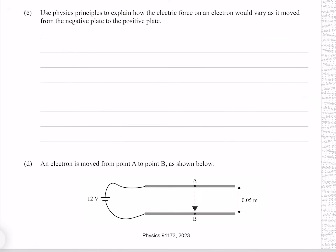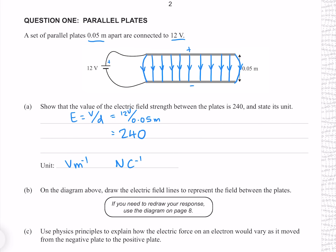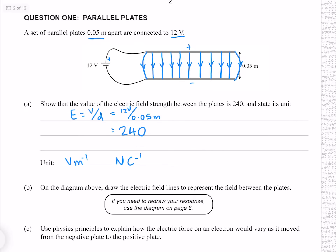Use physics principles to explain how the electric force on an electron would vary as it is moved from the negative plate to the positive plate. The electric field strength is indicated by the separation of the field lines, and as we journey from one plate to the other, the width of these lines does not change, so neither does the electric field strength. The force a charge experiences is the electric field strength times its charge. If this is an electron, the charge will not change because it is a fundamental property of the universe, and as discussed, the electric field strength won't change, so neither will the force.